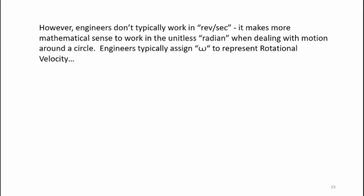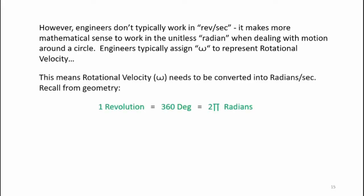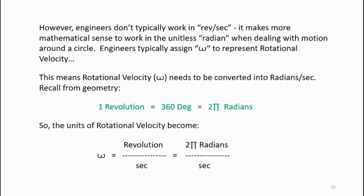But engineers don't typically work in revolutions per second. It actually makes more mathematical sense to work in the unitless radian when dealing with motion around a circle. Engineers typically assign omega to represent rotational velocity. This means rotational velocity needs to be converted into radians per second. Recall from geometry that one revolution is two pi radians. So units of rotational velocity become omega equals revolution per second, which equals two pi radians per second.